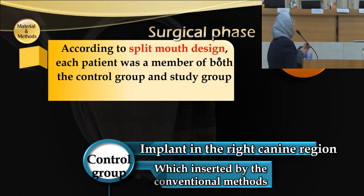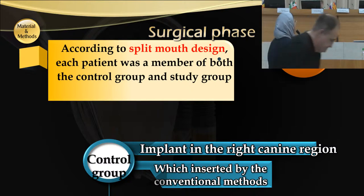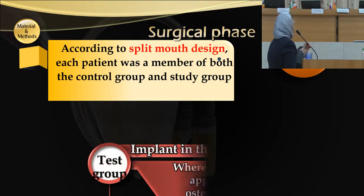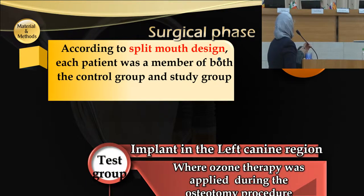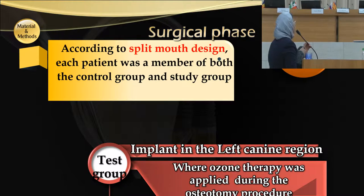In the control group, the implant in the right canine region was inserted by the conventional method. In the test group, the implant in the left canine region was placed where ozone therapy was applied during the osteotomy procedure.